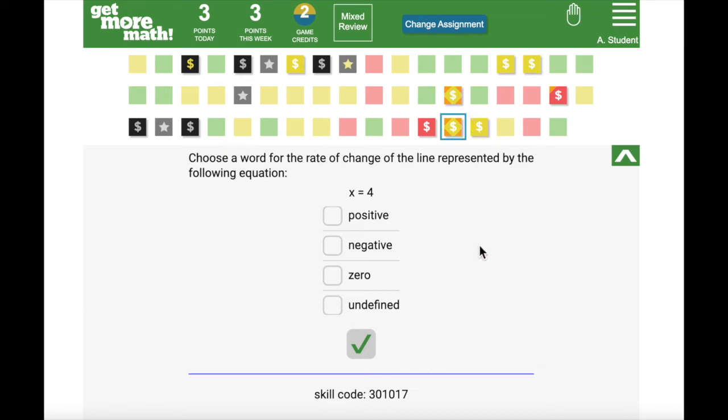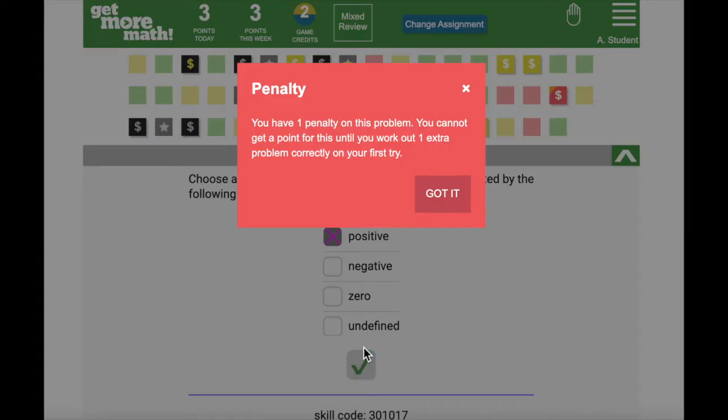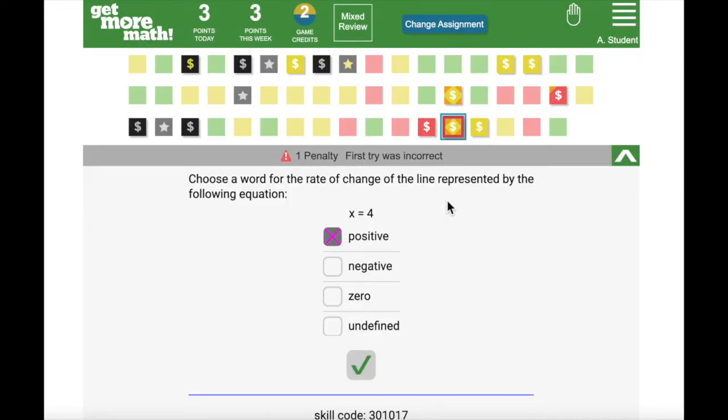When answering multiple choice questions, fixing mistakes works a bit differently. When I get this multiple choice problem wrong, I get something called a penalty. You will only earn penalties on multiple choice questions on skills that you've shown progress and understanding.